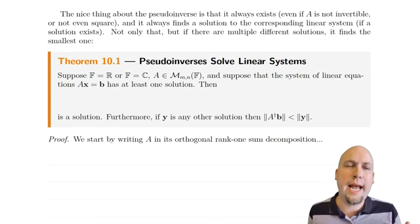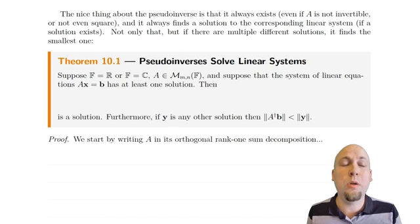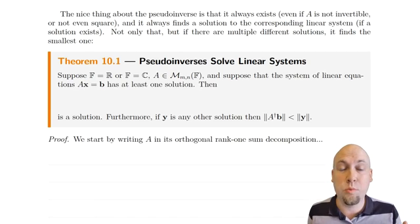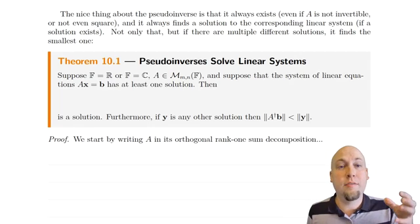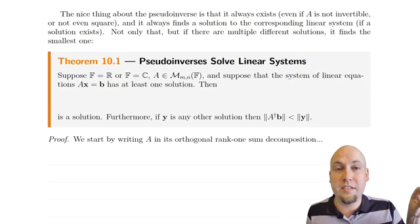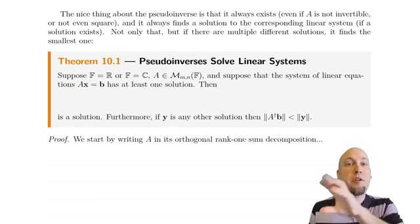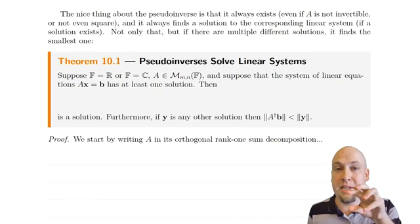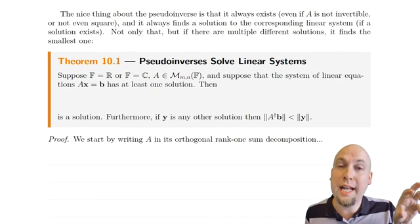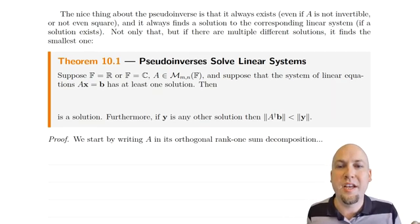What happens if you try to solve a linear system via the pseudo-inverse of a matrix? It turns out that it works really well, regardless of which of the three possible cases of a linear system you fall into — regardless of whether it has a unique solution, infinitely many solutions, or no solutions. So we're going to go through those three cases throughout this lecture.